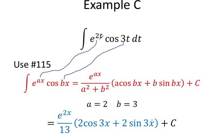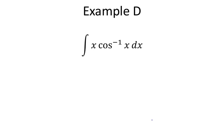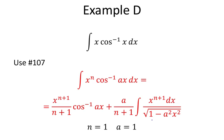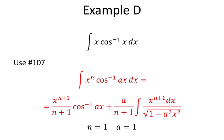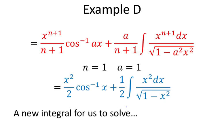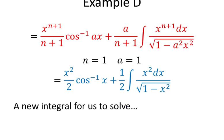x times the arc cosine of x. Look it up in the table. What's this going to be? It's going to be equation 107. In red, it's sort of a large one. It's another one that's recursive in nature where you're going to be given a second integral to solve. In this case, n equals 1 and a equals 1. So we end up substituting n, and that is our new equation. It's also a new integral for us to solve: the integral of x squared over square root of the quantity 1 minus x squared.